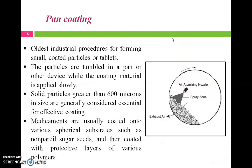The next technique is pan coating. It is the oldest industrial procedure for forming small coated particles or tablets, and is the same as tablet coating. The main disadvantage is that only larger-size particles — larger than 600 microns — can be coated by this method. The process, operation, and principle have already been discussed in the tablet coating chapter.